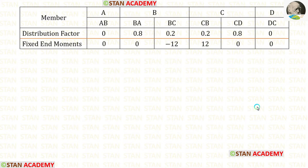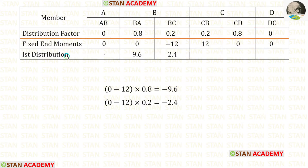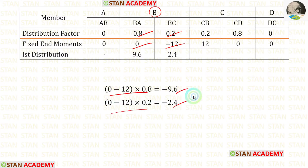Now let us start making the moment distribution table. In the table, first let us enter all of the members, then the distribution factors, then the fixed end moments. Now let us do the first distribution. First let us do it in joint B — we have to add these two fixed end moments. When we do that we are getting negative values, so we have to enter them in the table as positive.